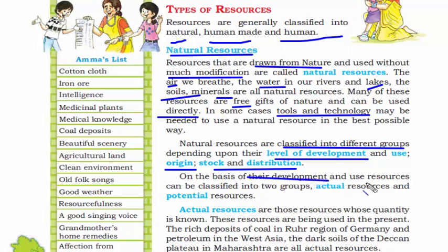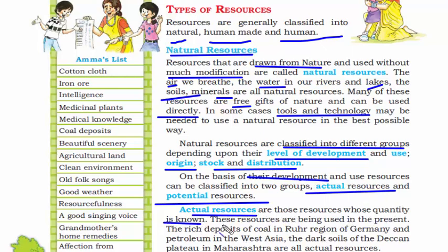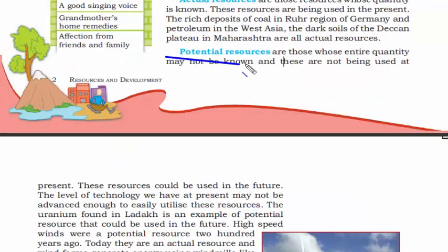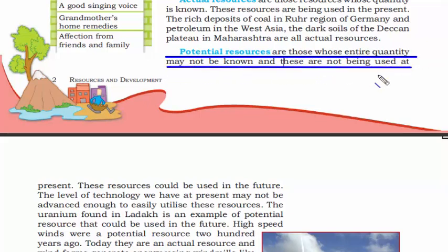On the basis of development, resources are divided into actual resources and potential resources. Actual resources are those whose quantity is known — examples include coal, petroleum, and dark soil. Potential resources are those whose entire quantity may not be known and are not being fully used at present, often because we don't have the advanced technology to use them in a full-fledged manner. There are still many things to be discovered and reused, but we lack the infrastructure.